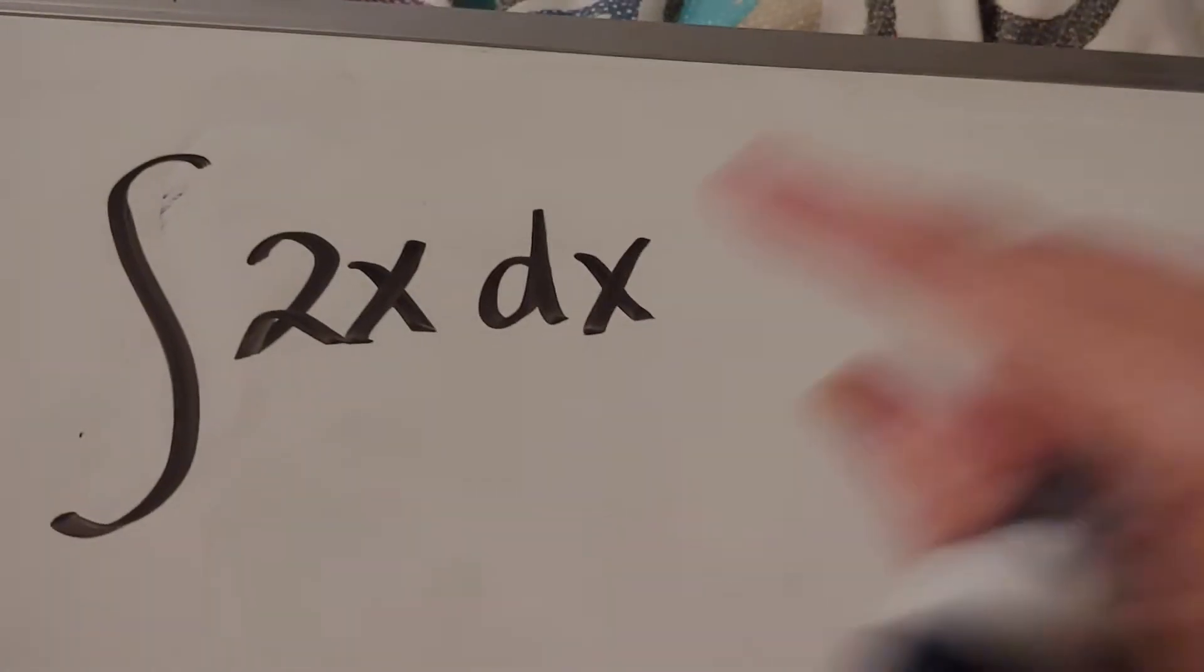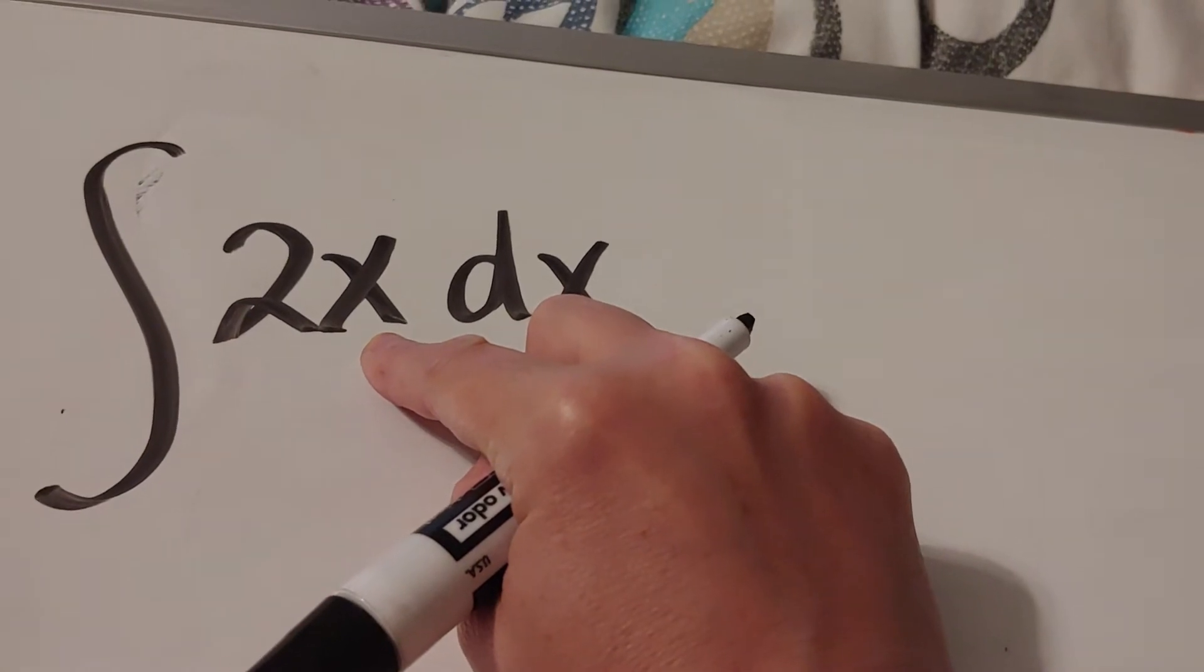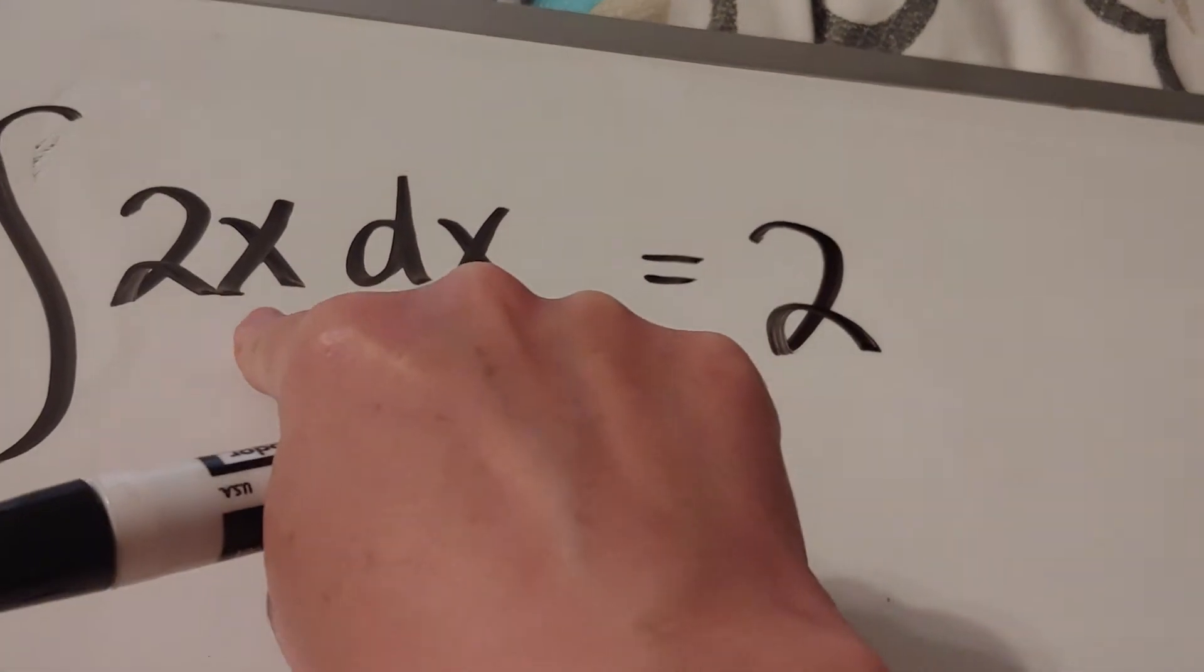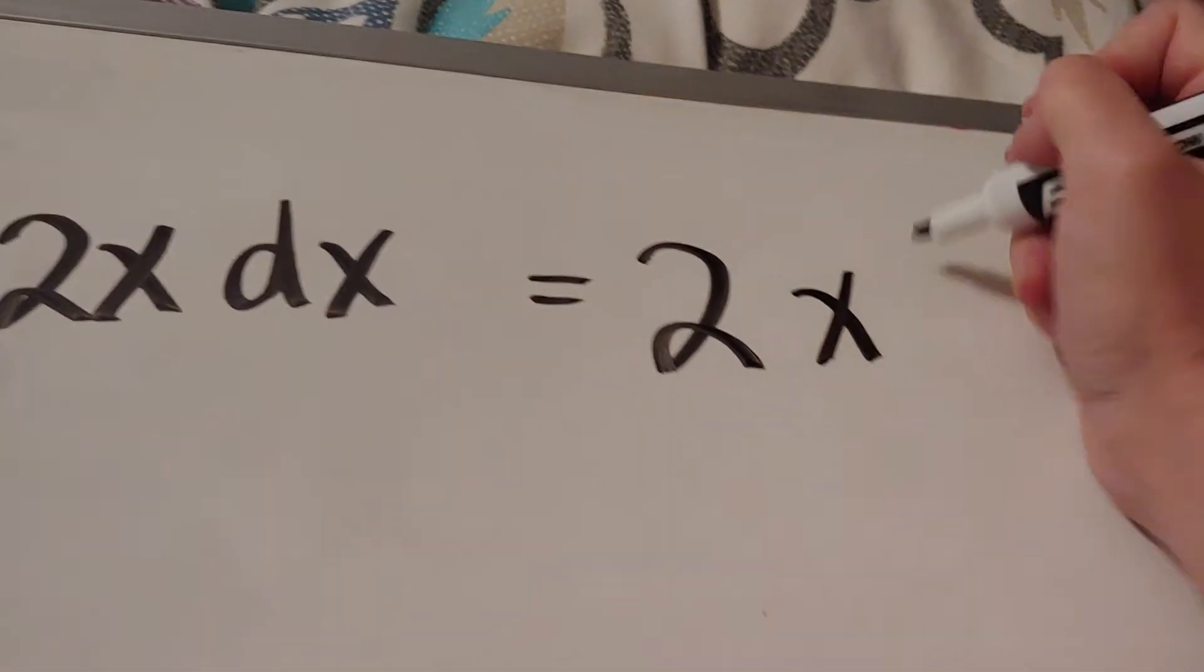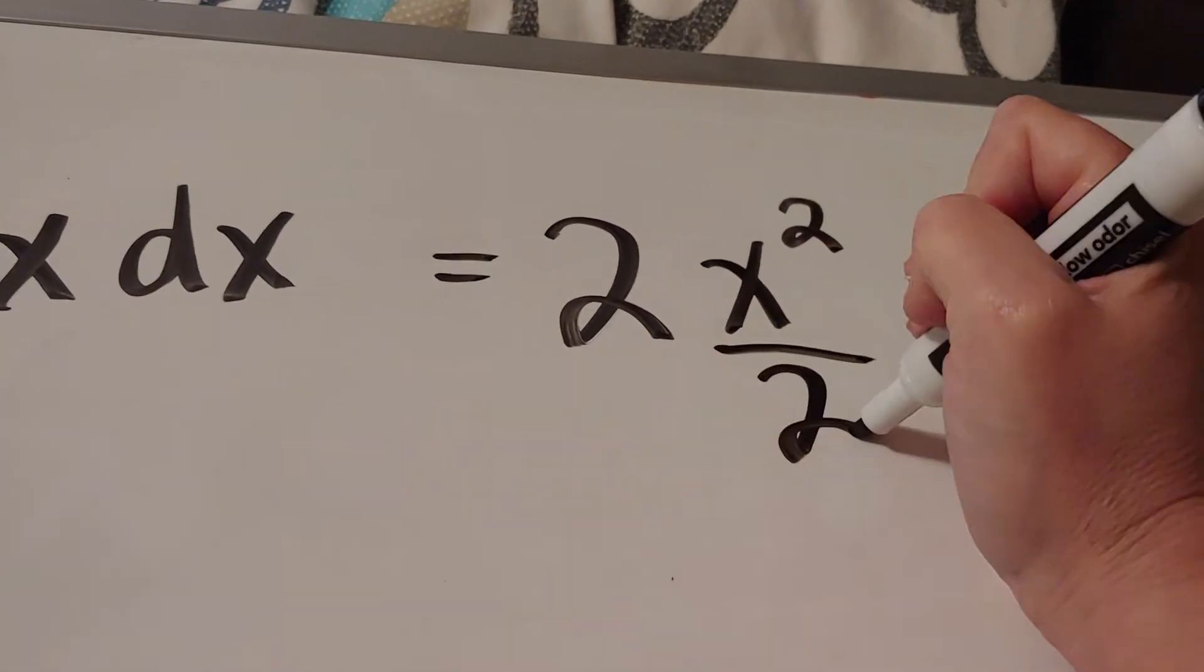What that means is that for this problem, the 2 is just going to hang out while I do the power rule on the x to the first. So the 2 is just going to chill out, but the x to the first is going to be add a 1, so 1 plus 1 is 2, and then divide.